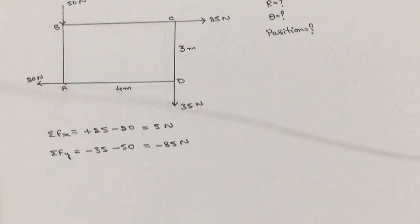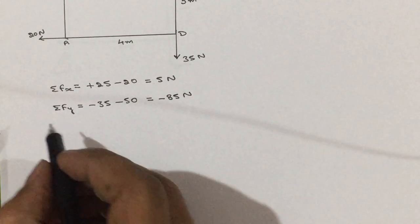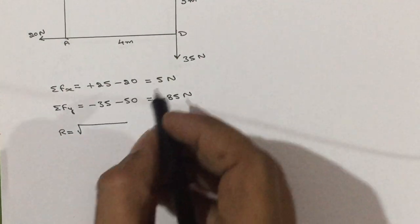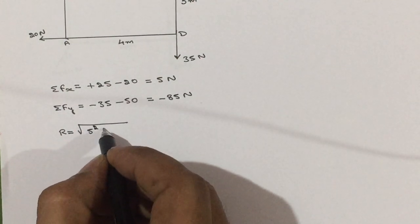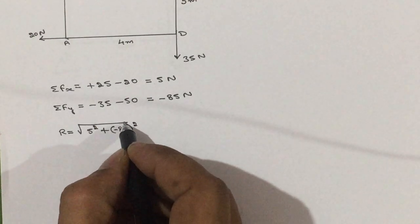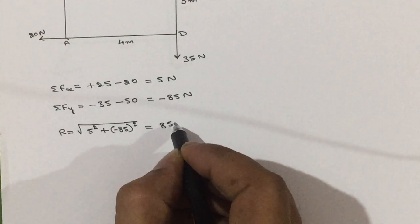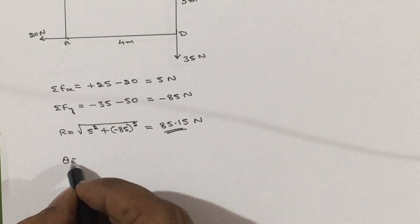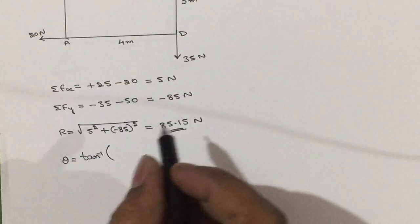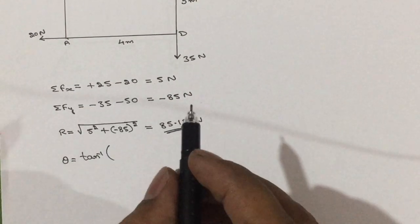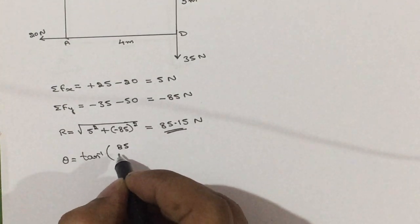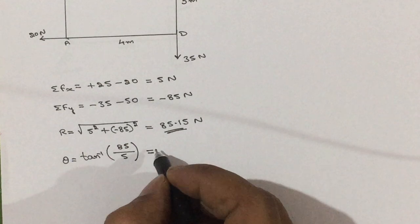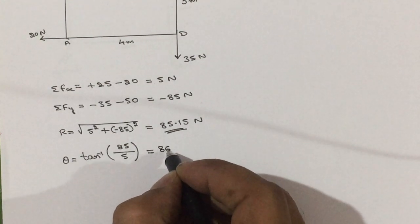Once you get sigma Fx and sigma Fy, calculate R and theta. The magnitude of the resultant R is given by the square root of sigma Fx squared plus sigma Fy squared — that is sqrt(5² + (−85)²) — giving a value of 85.15 Newton. Then direction theta is given by tan inverse of sigma Fy divided by sigma Fx, taking only positive values: theta equals 86.63 degrees.